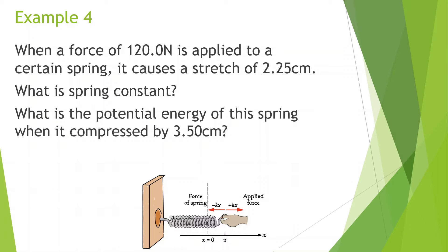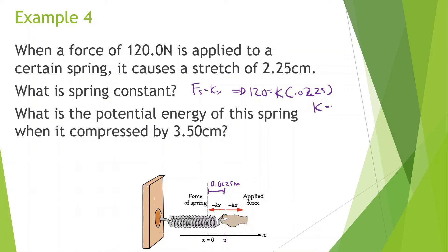When a force of 120 newtons is applied to a certain spring, it causes a stretch of 2.25 centimeters. What is the spring constant? We're stretching it 0.0225 meters from equilibrium. Using F = kx: 120 equals k times 0.0225. So k equals 120 divided by 0.0225, which gives us 5,333 newtons per meter. Spring constants are often large numbers.